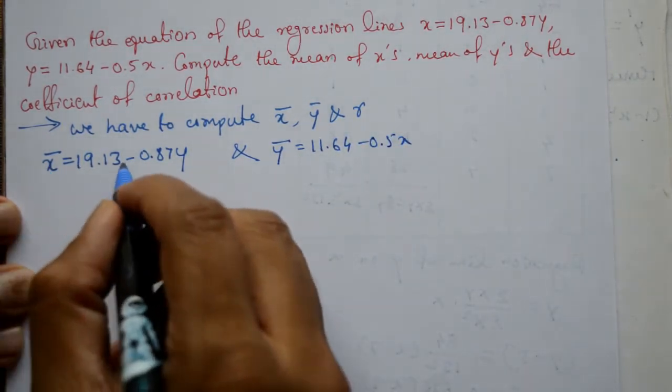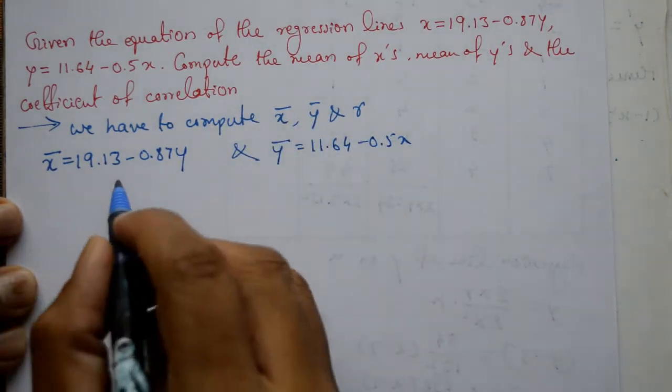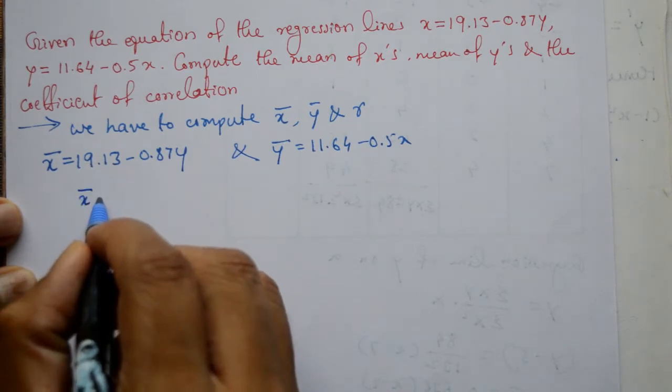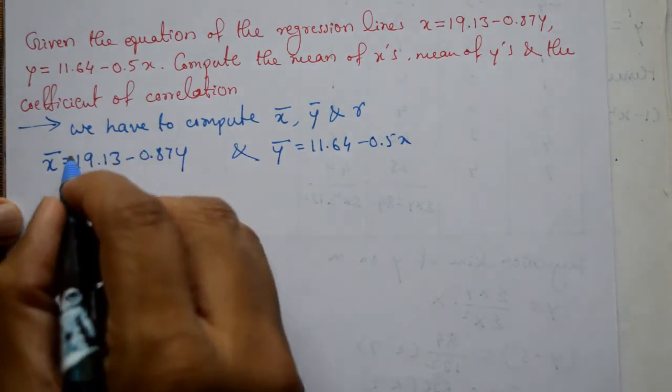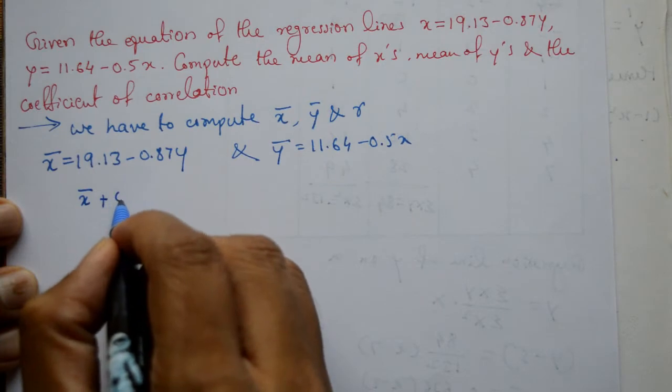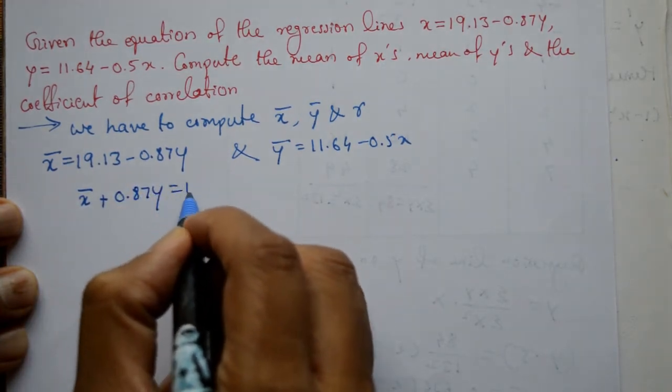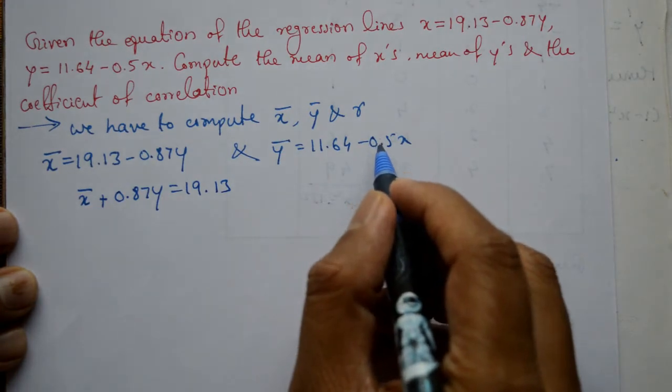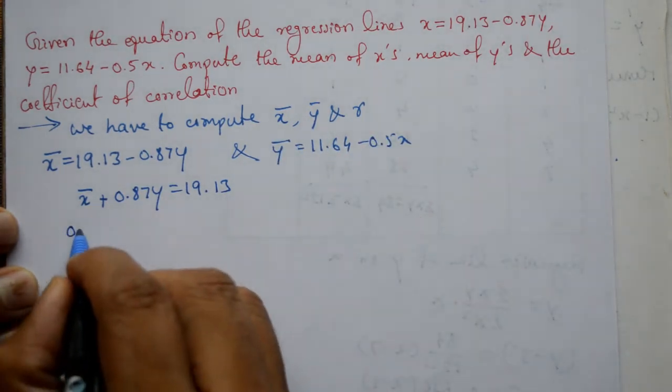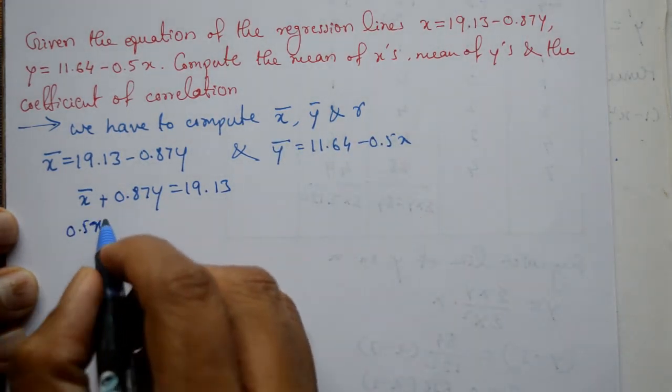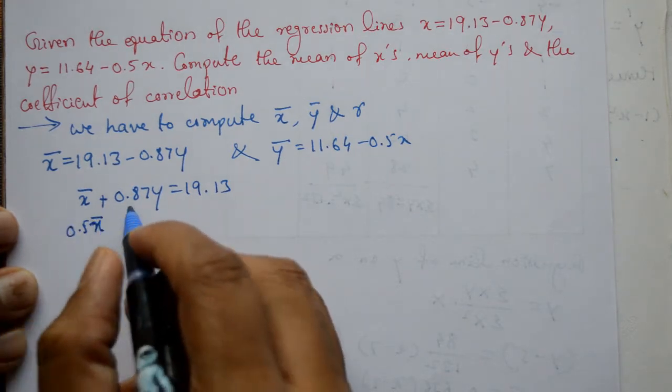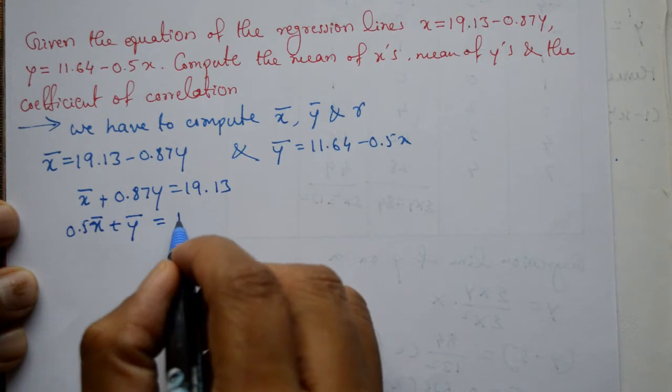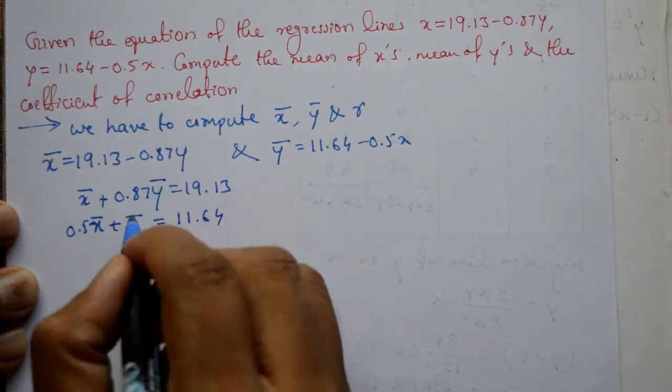To find x bar and y bar, we rearrange this equation. Taking x bar plus y to one side, we get x bar plus 0.87 into y equal to 19.13. Similarly, 0.5 into x plus y bar equal to 11.64.